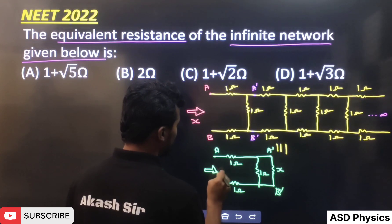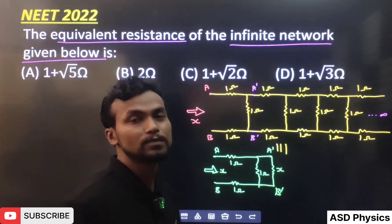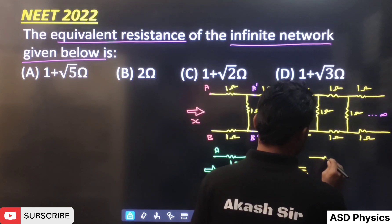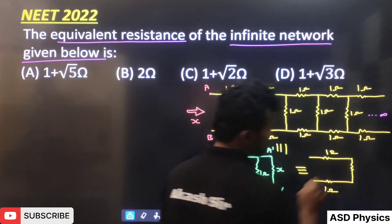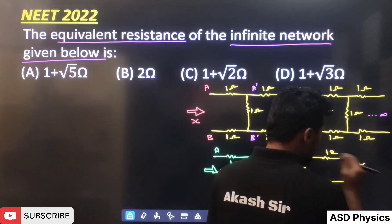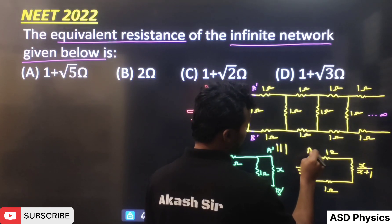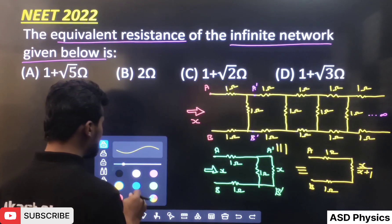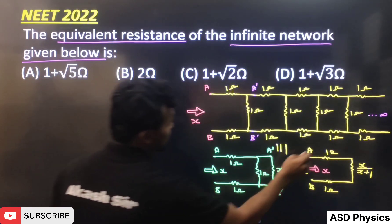Now, students, you can see which resistances are connected in parallel. This X and 1 ohm are connected in parallel. We have to use the formula R1·R2 / (R1+R2). For convenience, I'll draw one more circuit here: 1 ohm, 1 ohm, and X and 1 in parallel, which gives X·1/(X+1), that is X/(X+1). And here 1 ohm and 1 ohm are also there. This is A and this is B. All three resistances are connected in series.